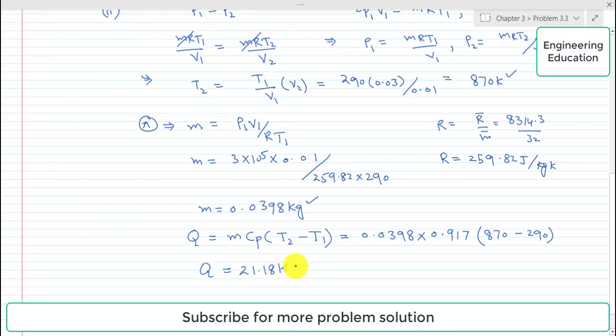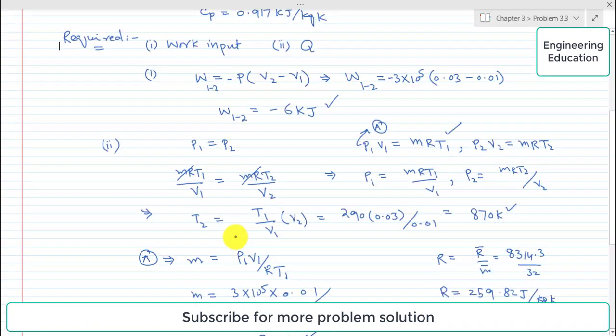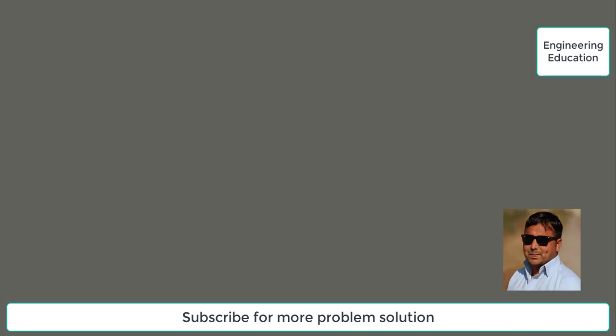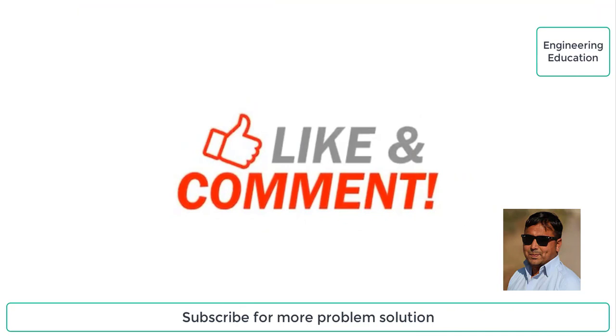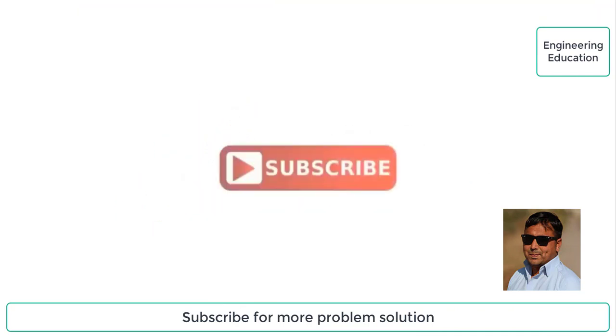This is the solution of part 2. We found two values in this problem: the value of work input and the heat supplied during the expansion process. This is all about the solution of problem 3.3. Thanks for watching. Please like and comment on my videos. Also subscribe my channel to get new videos.